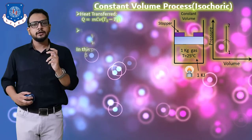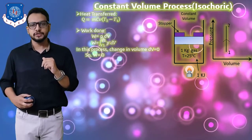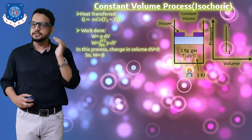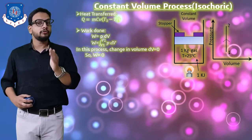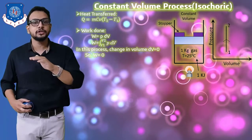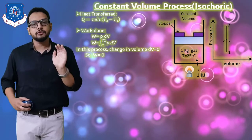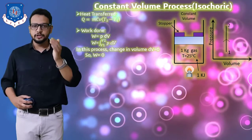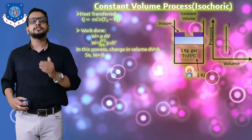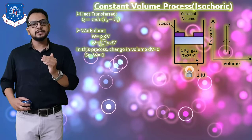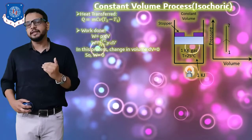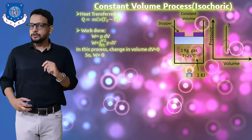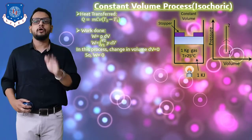Next, we determine work output during this constant volume process. As we know, when heat is supplied, a stopper is placed in the piston-cylinder arrangement which does not allow the piston to move upward — there is no change in volume. Using the work output equation W = p·dv, since there is no change in volume, the work output W will be zero. We conclude that no work is done by the system or on the system.